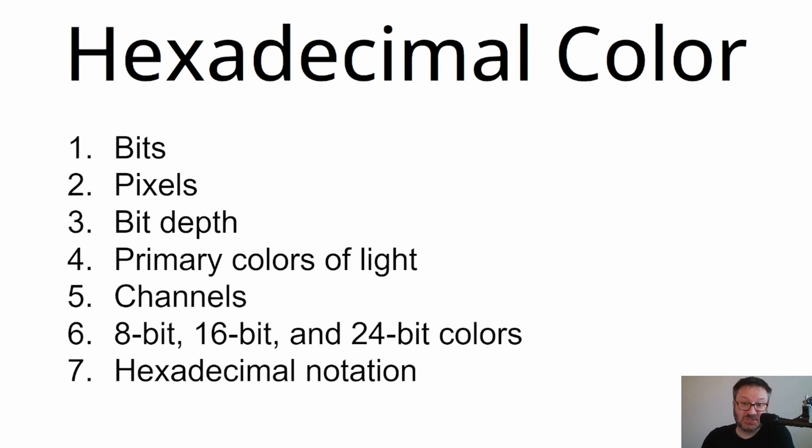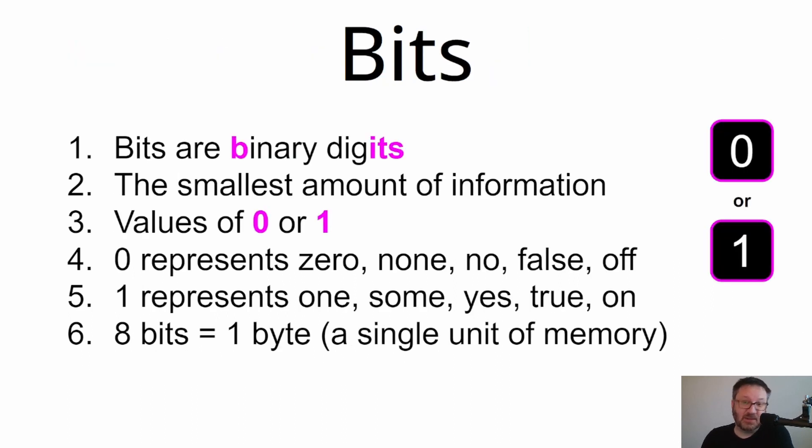The first thing to talk about is bits. Briefly, bits are binary digits and it just really means a one or a zero. They are the smallest amount of information in a computer and they take two states: zero or one. Zero can represent the number zero, none, no, false, off—a negative in some way. One is the opposite, representing a positive: the number one, something, yes, true, or on. When you have eight bits together, that's known as a byte, which is a single unit of memory.